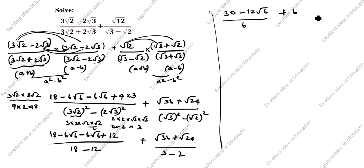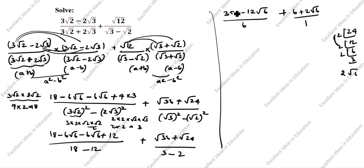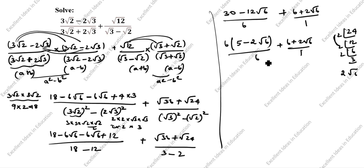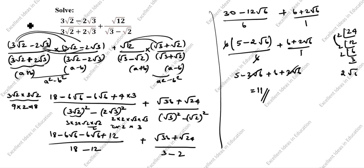Now collecting: 18 plus 12 is 30, minus 6 root 6 minus 6 root 6 is minus 12 root 6, divided by 6. Plus root 36 is 6, and root 24 — factoring 24 as 2 times 2 times 6 — gives 2 root 6. So we take 6 common: 6 fives are 30 minus 2 sixes are 12 root 6 divided by 6, plus 6 plus 2 root 6. The 6s cancel. We get 5 minus 2 root 6 plus 6 plus 2 root 6. The root 6 terms cancel, and 5 plus 6 is 11. So 11 is the answer. This is the first method.